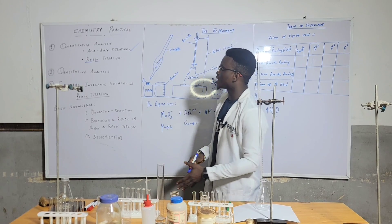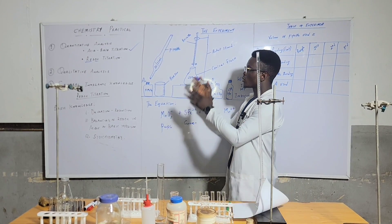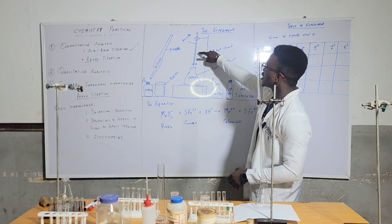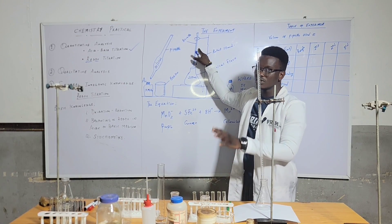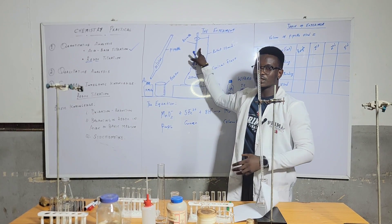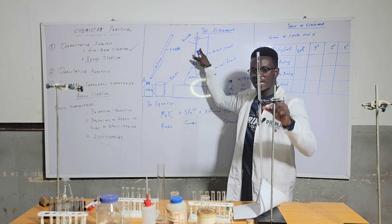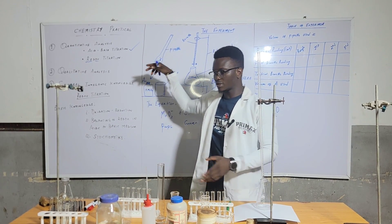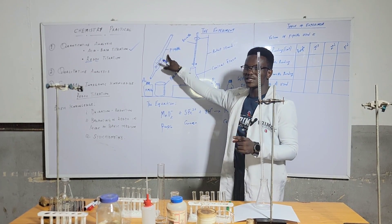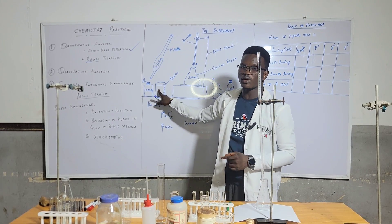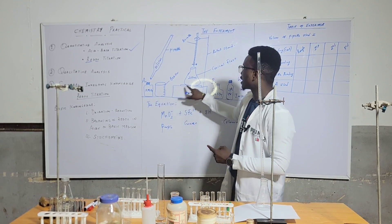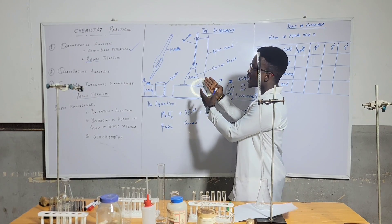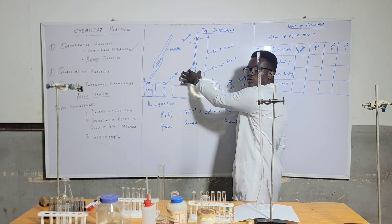What we are focusing on today is quantitative analysis. I have drawn this to depict what I have on the table. What I have here is called the burette — from your experience, what used to be in the burette is the acid. This is called the pipette, which is used to take liquid from the beaker and transfer it into the conical flask, where your reaction takes place.